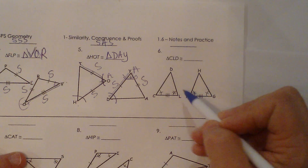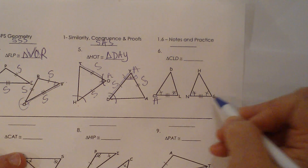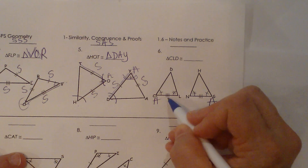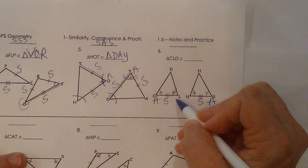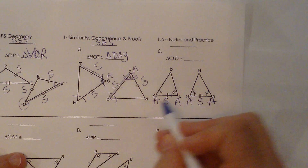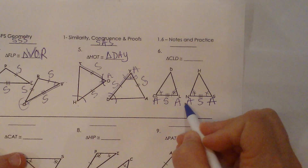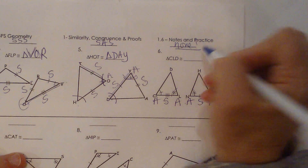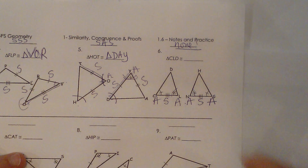We have an angle here matching angle G, then I have a side here and a side here, and then L and N that are corresponding. So I have angle, side, angle, angle, side, angle. Out of the two postulates we know — Side-Side-Side or Side-Angle-Side — we don't have two confirmed congruent sides in the right configuration, so we don't know that those are congruent.